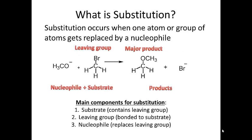First, let's talk about what substitution is. It occurs when an atom or group of atoms gets replaced by the nucleophile. Here is a nucleophile with a negative charge on oxygen. Here is the group that's going to be substituted — we call that the leaving group. When this group attacks this carbon, it does a substitution whereby the leaving group bromine leaves and is replaced by the incoming nucleophile.